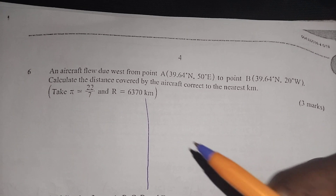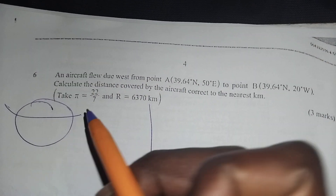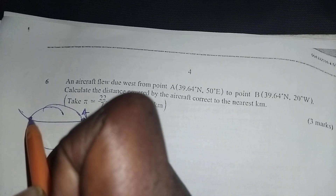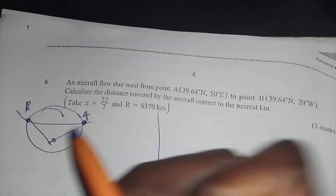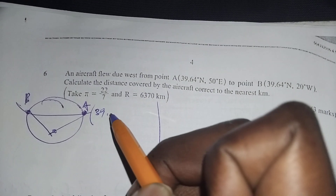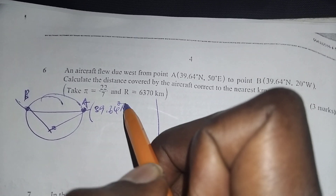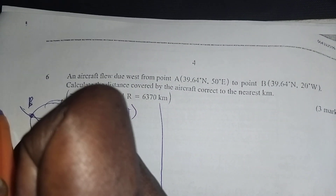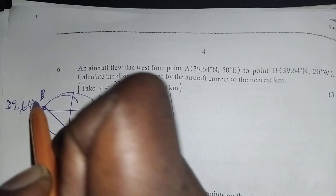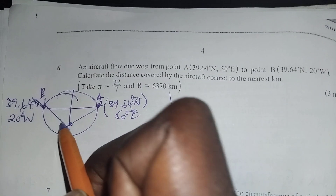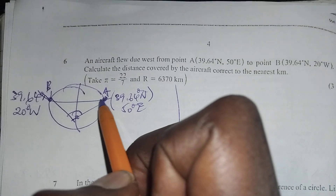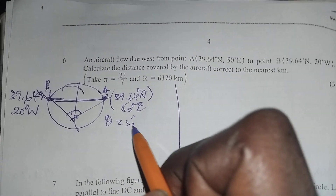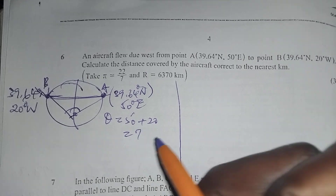We have point A at 9.64 degrees north, 50 degrees east, and point B at 9.64 degrees north, 20 degrees west. Since it is flying due west, the angle of change will be 50 plus 20, which is 70 degrees.